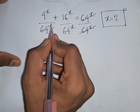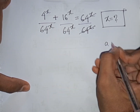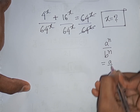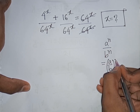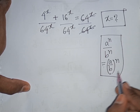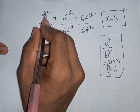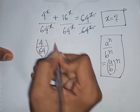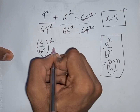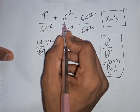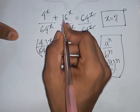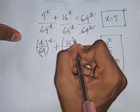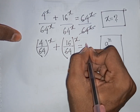Now x has the same power but different bases. Remember this formula: a^n / b^n = (a/b)^n. According to this exponential rule, we can write (4/64)^x plus (16/64)^x is equal to 1.